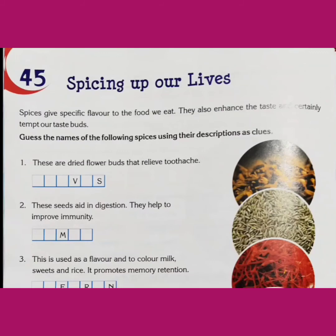Spice number one: These are dried flower buds that relieve toothache. ये लौंग होती हैं — इन्हें हम CLOVES कहते हैं। C-L-O-V-E-S, cloves. हिंदी में इन्हें लौंग कहते हैं। Spice number two: These seeds aid in digestion — ये बीज भोजन को पचाने में सहायता करते हैं। They also help to improve immunity — हमारी प्रतिरक्षा शक्ति को मजबूत करते हैं। इन्हें हिंदी में जीरा कहते हैं और English में CUMIN. C-U-M-I-N, cumin.